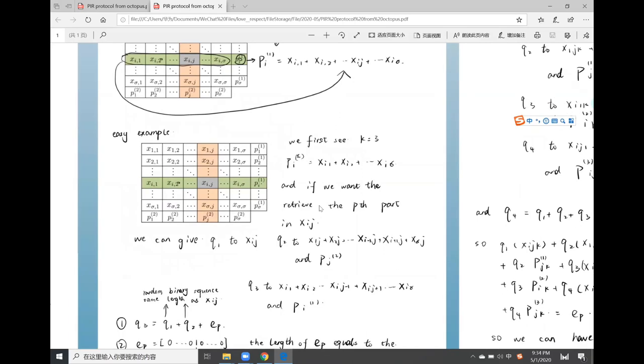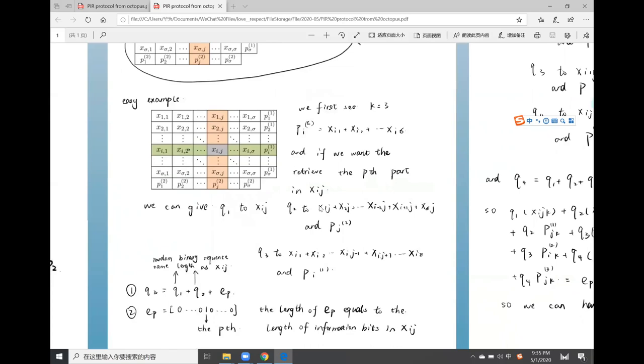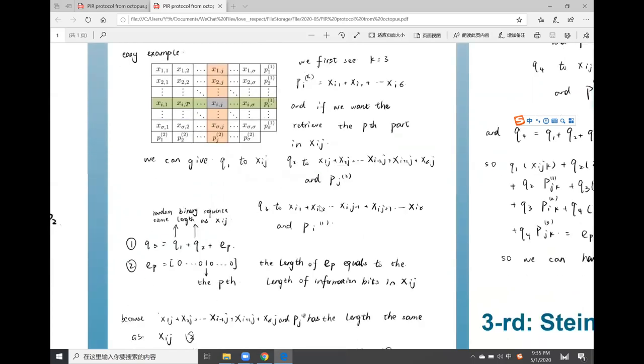The purpose of us is to retrieve the P part in x_ig. We will do the same thing that was talked about before. We are going to generate two random binary sequences, the same length as x_ig, names q1 and q2.